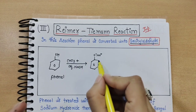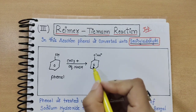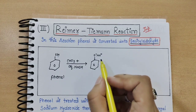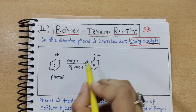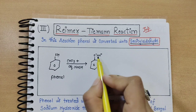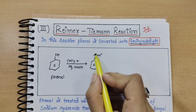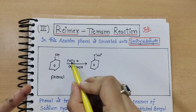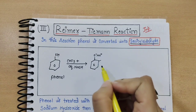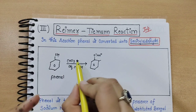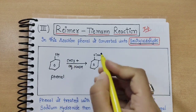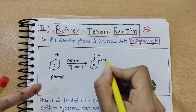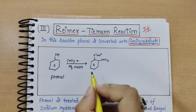Because you have CHCl3, the substitution occurs at the ortho position. The ortho product becomes stable due to intramolecular hydrogen bonding. Sodium phenoxide reacts with CHCl3, and since one H and one Cl are removed, the intermediate becomes CHCl2.